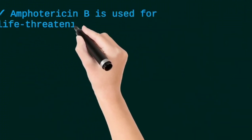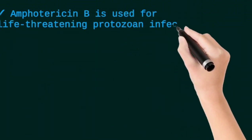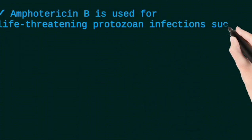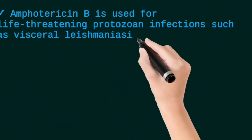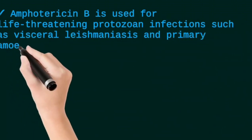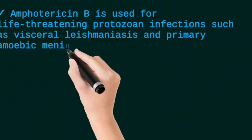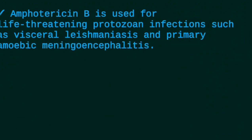Amphotericin B is used for life-threatening protozoal infections such as visceral leishmaniasis and primary amoebic meningoencephalitis.